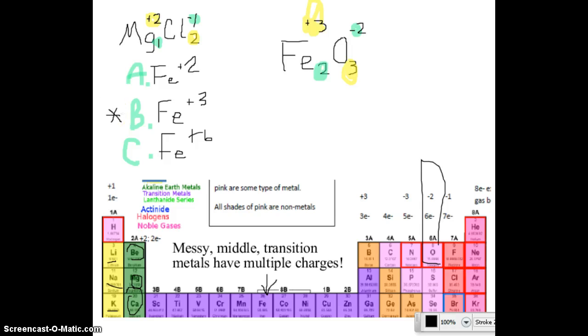That's how you do the messy middle transition metal. And when you write the name, just so that you know, so that you've seen it, we actually take into account the fact that it had a plus 3 charge, and they write it as Roman numerals. So it would be iron 3, and not oxygen but oxide.